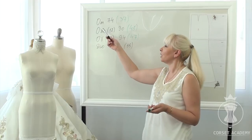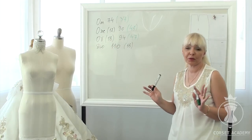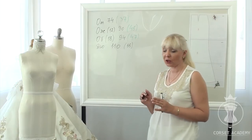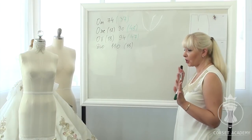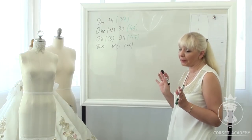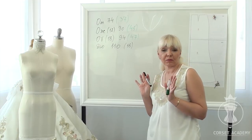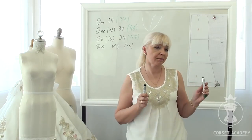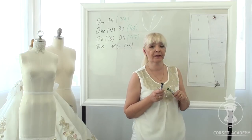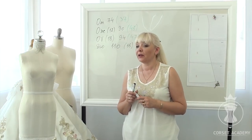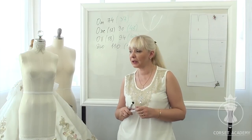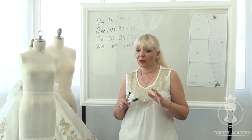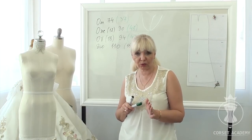Waist circumference: 74 centimeters (37 centimeters). Stomach circumference measured 12 centimeters below waistline: 90 centimeters (45 centimeters). Hip circumference measured 18 centimeters below waistline: 94 centimeters (47 centimeters). Skirt length: 110 centimeters (55 centimeters). First, I will do all pattern adjustment calculations with the actual full-size values, and then I will divide the resulting values in half and apply corresponding adjustments to the half-scale pattern.